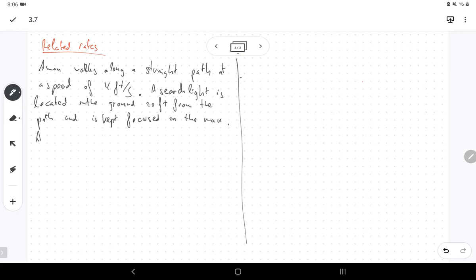At what rate is the searchlight rotating when the man is 15 feet from the point on the path closest to the searchlight?